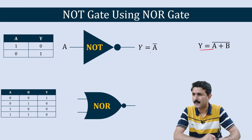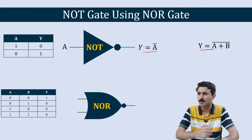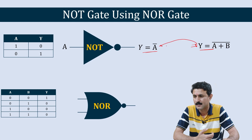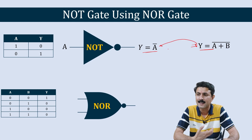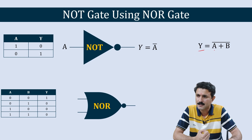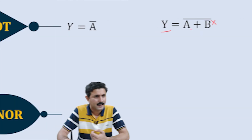This is the output equation of NOR gate, and our aim is to modify this equation such that after modification it looks like the NOR gate output equation, so that we can directly replicate this using NOR gate. For that we need to make some modifications in this equation.